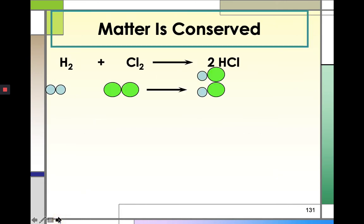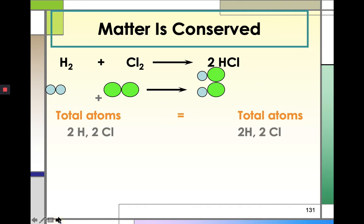Take note that matter is conserved. For example, the reaction of hydrogen gas and chlorine gas to form hydrogen chloride — two molecules of hydrogen chloride will be formed. If you look at the total number of atoms, they are the same on both sides, both in the reactants and in the product side: two H's and two Cl's for both sides.